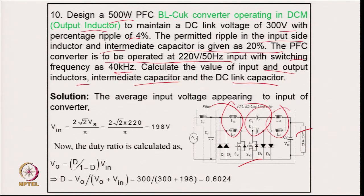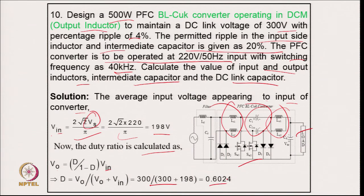The average input voltage at the converter input is V_in = (√2 × V_s) / π, giving 198 V. The duty ratio from the given output voltage and input voltage comes to D = 0.6024, above 0.5, confirming boost mode operation.